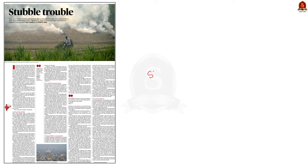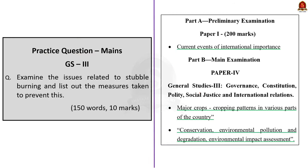Look at this article. It covers the most important challenge of recent times — the issue of crop residue burning or stubble burning. This is primarily a socio-environmental issue which is affecting the air quality of North India. In this context, let us quickly go through what is stubble burning, issues related to it, and various steps taken by government in our usual mains answer writing approach. The question is: Examine the issues related to stubble burning and list out the measures to prevent this. This question can be asked in GS Paper 3 under the syllabus of Conservation, Environmental Pollution, Degradation, and Environmental Impact Assessment. Let us start with the introduction.